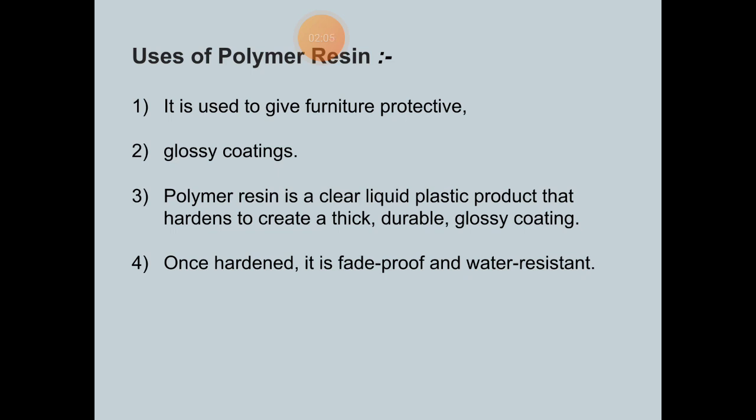Uses of polymer resins: it is used to give furniture protection — in the furniture business, these polymer resins are used. The second use is as a glossy coating. Polymer resin is a clear liquid plastic product that hardens to create a thick, durable, and glossy coating. Once hardened, it is fade-proof and water-resistant.